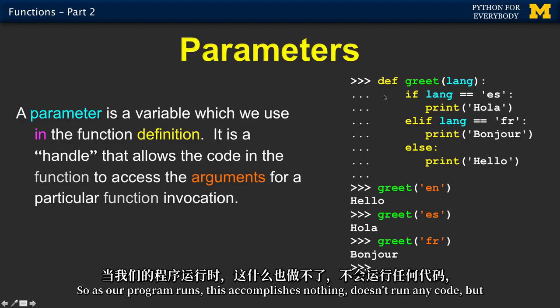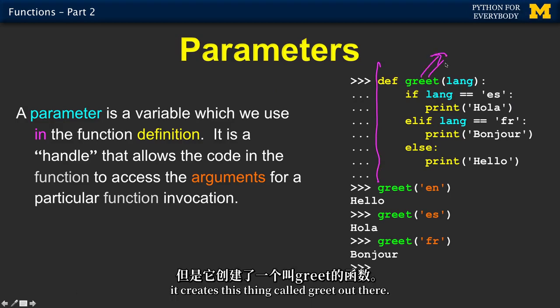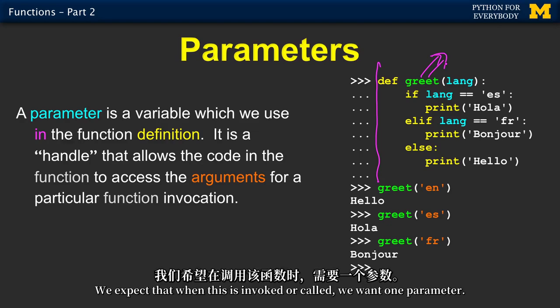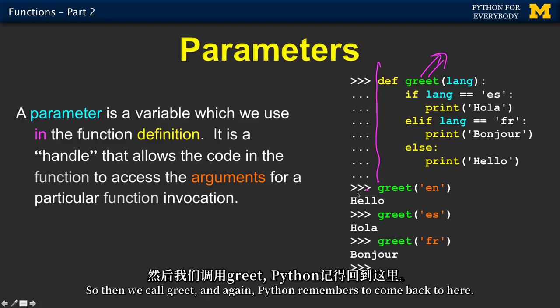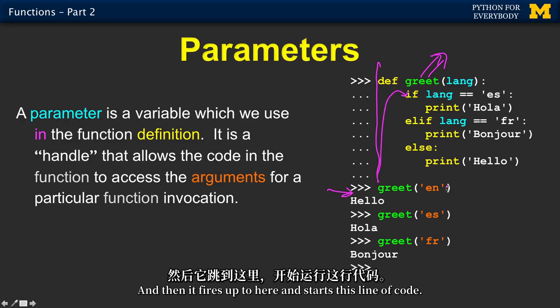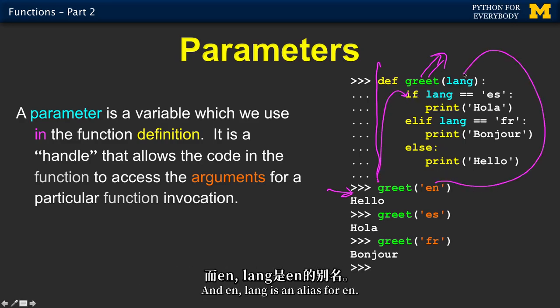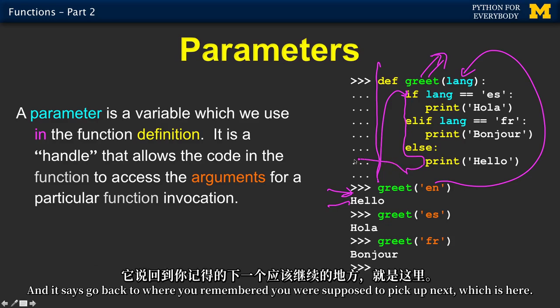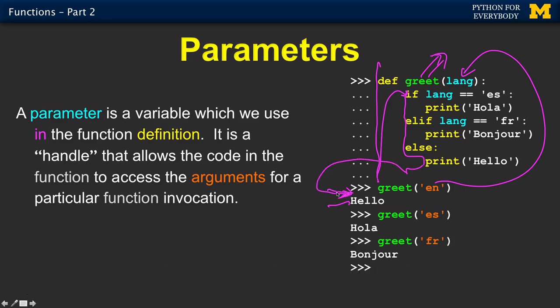And so this really is just a placeholder to say whatever the first parameter was. If that first parameter is es, then print this. If the first parameter is fr, print that. Otherwise, print that. So, as our program runs, this accomplishes nothing. Doesn't run any code. But it creates this thing called greet out there. And we've indicated to Python, we expect a parameter. We expect that when this is invoked or called, we want one parameter. So then I call greet. And, again, Python remembers to come back to here. And then it fires up to here and starts this line of code. And en, lang, is an alias for en.